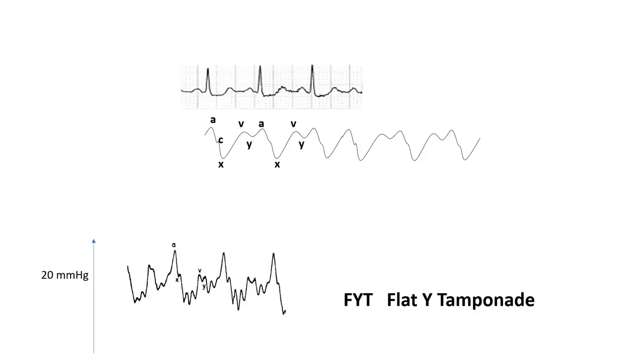Note that tamponade is the only high RA pressure condition with a flat Y descent. It's FYT — flat Y tamponade.